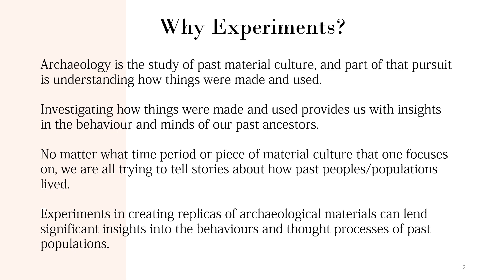Before we talk about how to set up experiments well, we need to understand what a bad experiment looks like. Pictured here is my friend Matt — a long-time colleague, for better or for worse. There's one thing you'll know about Matt: he really loves Acheulean hand axes. You can't sit down for more than five minutes without him talking about them. Matt loves to study how these things were made, and he also knows how to make hand axes. He has this glorified idea of trying to understand the mind of an Acheulean hominin.